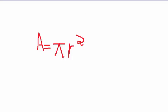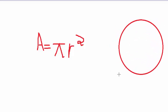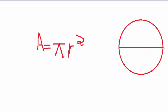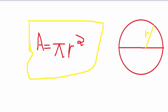Ok guys, the basic formula for the area of a circle is A is equal to pi r squared. So we have to find the radius of a circle, and if we find that radius then we can find the area of a circle.